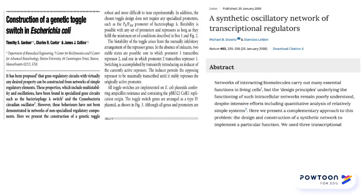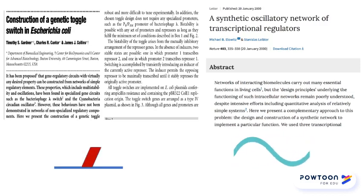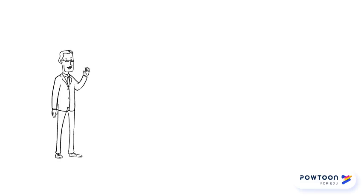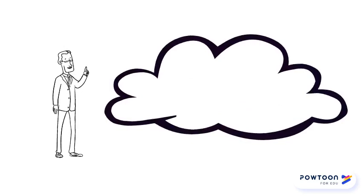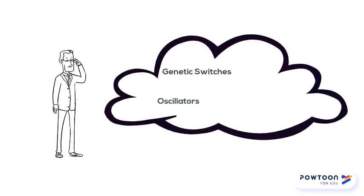In 2000, the first gene circuits were designed and constructed in bacterial systems. This included the toggle switch, allowing cells to switch gene expression from on to off, and an oscillator, where gene expression is induced in a rhythmic manner. Since then, synthetic biology has allowed scientists to not only replicate these complex genetic circuits, but also design and engineer different types of artificial circuits into other organisms. These different types of circuits include genetic switches and oscillators, as well as filters and communication modules.